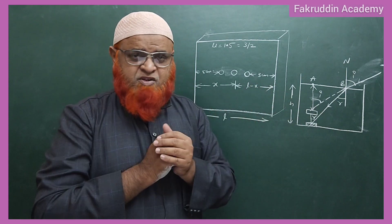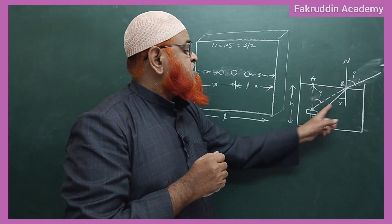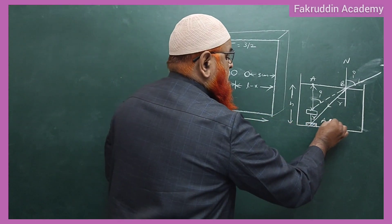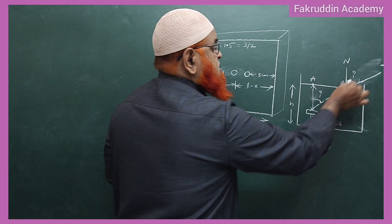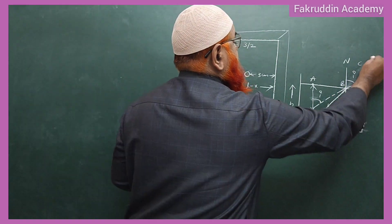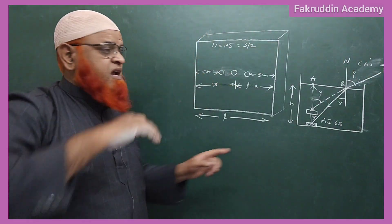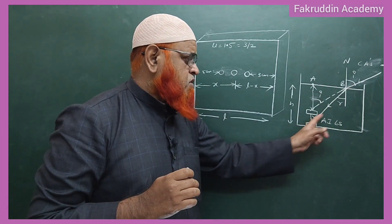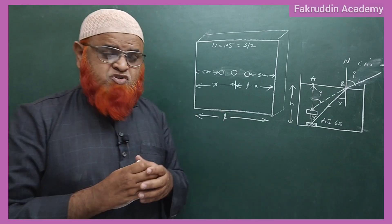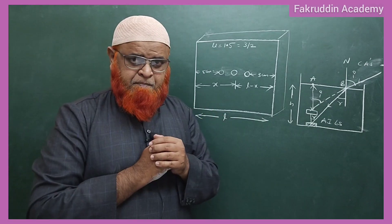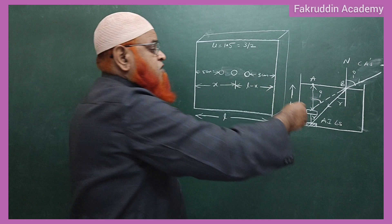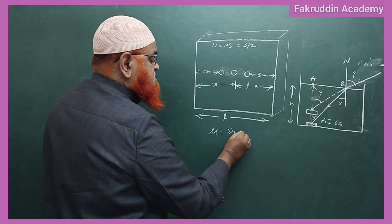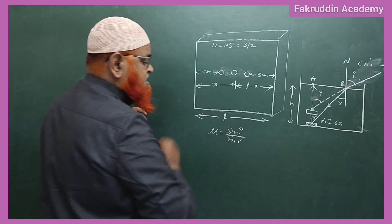These two angles are called alternate interior angles, and these two are called corresponding angles, because these two lines are parallel. According to geometry, the alternate interior angles are going to be the same. Now, refractive index is nothing but sine i by sine r, according to Snell's law.